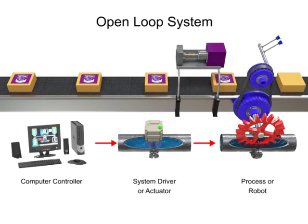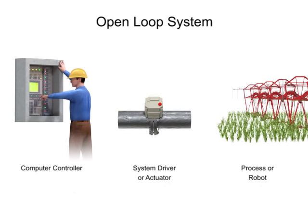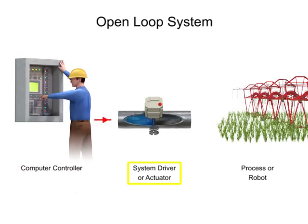A simple example of an open-loop system is an industrial sprinkler system. In this example, the programmer updates the computer controller, which will turn the sprinkler on at a designated time. When the computer sends the signal, the water valve will turn on.